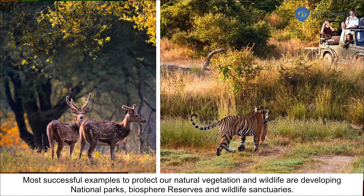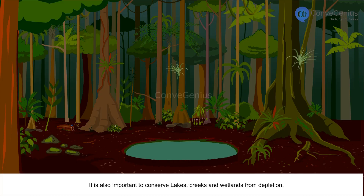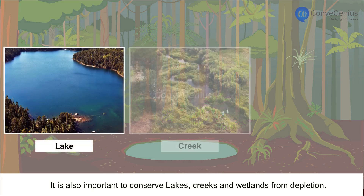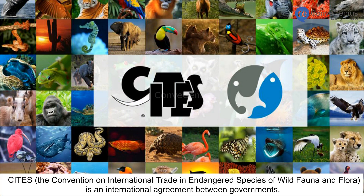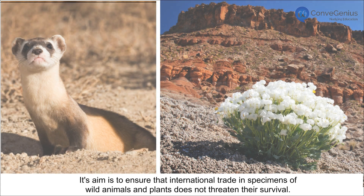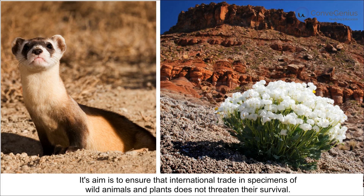The most successful examples to protect our natural vegetation and wildlife are developing national parks, biosphere reserves and wildlife sanctuaries. It is also important to conserve lakes, creeks and wetlands from depletion. CITES — the Convention on International Trade in Endangered Species of Wild Flora and Fauna — is an international agreement between governments whose aim is to ensure that international trade in specimens of wild animals and plants does not threaten their survival.